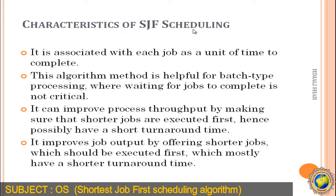The characteristics of the SJF scheduling algorithm: each job is associated with a unit of time to complete. This method is helpful for batch-type processing where waiting for the job to complete is not critical. It can improve process throughput by ensuring the shortest jobs are executed first, hence possibly having the shortest turnaround time. It improves job output by offering the shortest jobs first, which mostly have the shortest turnaround time.